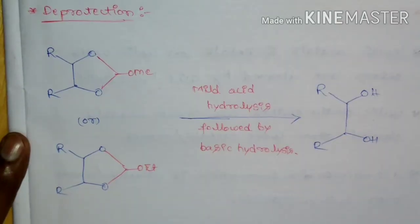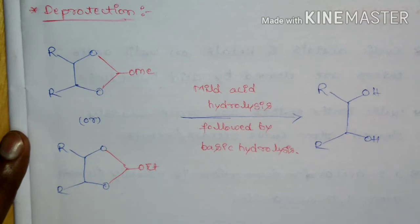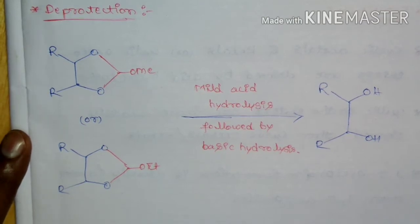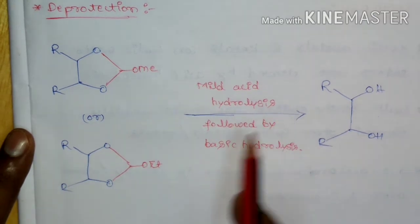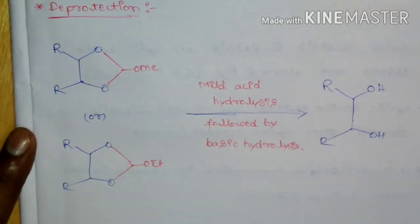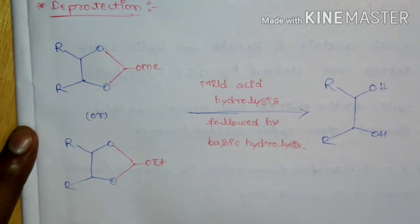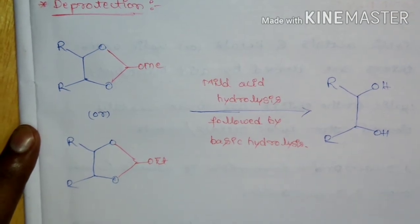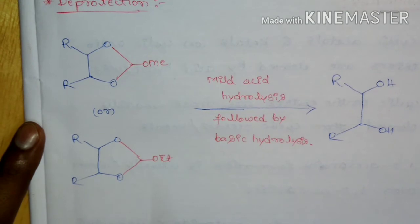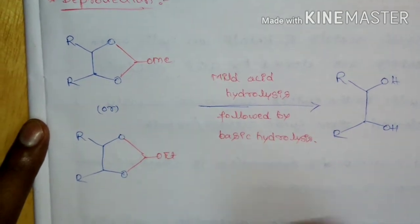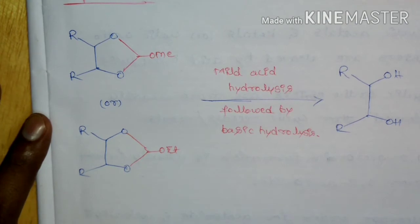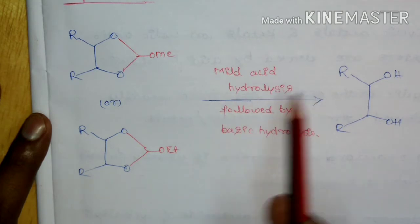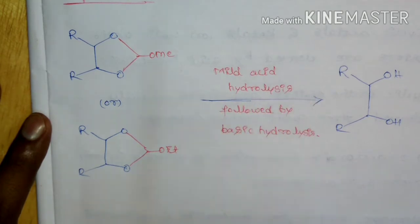For deprotection of alkoxymethane acetals, it is deprotected by mild acid hydrolysis followed by basic hydrolysis. Mild acid hydrolysis forms monoformates, and those monoformates are then removed by basic hydrolysis. So overall, deprotection requires mild acid hydrolysis followed by basic hydrolysis.